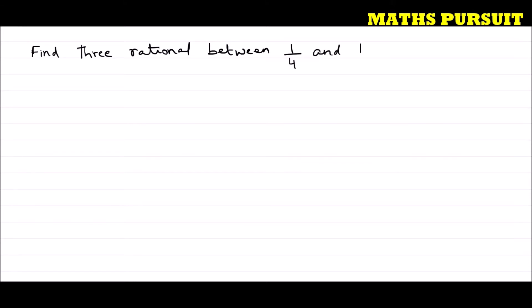We can find rational numbers between any two given numbers using two methods. Let us first adopt the first method — finding out the rational number using the mean of the given numbers.